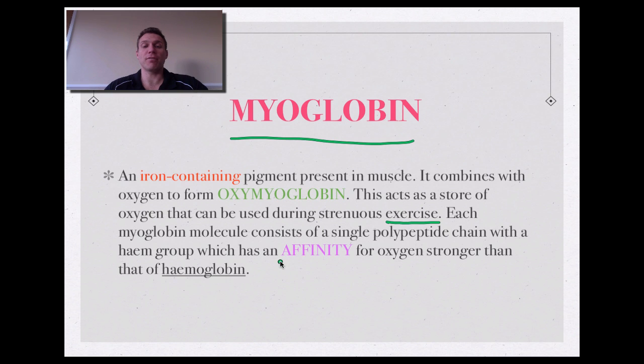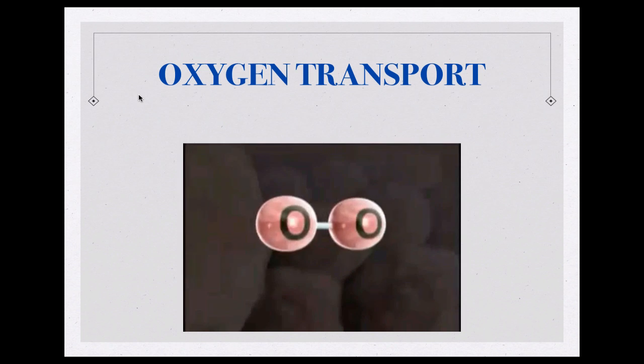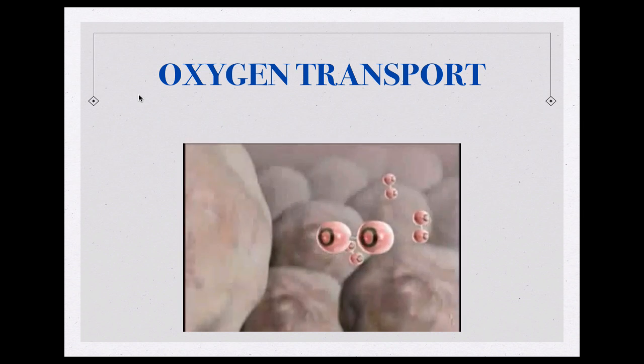The interesting fact to compare is that myoglobin actually has a higher affinity for oxygen than hemoglobin. Oxygen and its bond with myoglobin is stronger because it has a higher affinity than it does for hemoglobin, hence why it enters the muscle cells when required.